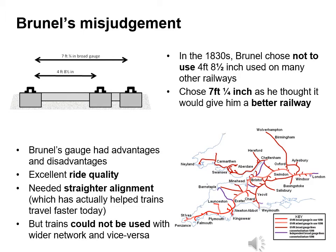In the 1830s, Brunel did not choose the 4 foot 8.5 inch gauge used on the other railways. He decided upon a 7 foot and a quarter inch gauge as he thought it would give him a better railway. Brunel's gauge had advantages and disadvantages. It provided an excellent ride quality and needed straighter alignment, which has actually helped trains travel faster today. But trains could not be used with the wider network and vice versa, which led to some serious problems.